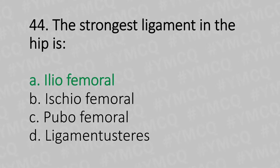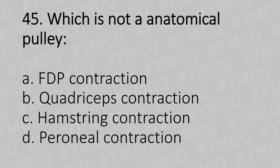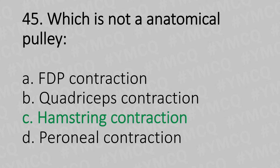Moving to our 45th question. Which is not an anatomical pulley? Option A: Flexor digitorum profundus contraction. Option B: Quadriceps contraction. Option C: Hamstring contraction. Option D: Peroneal contraction. And the answer is Option C: Hamstring contraction.